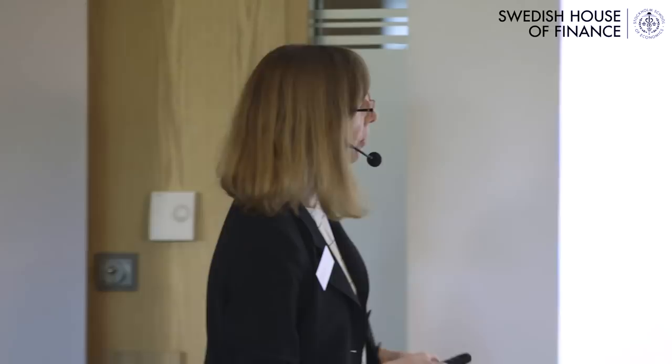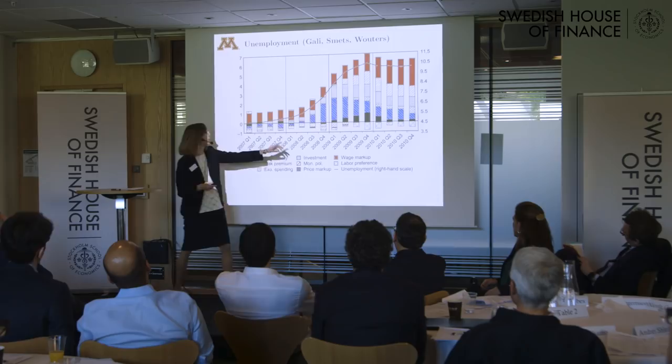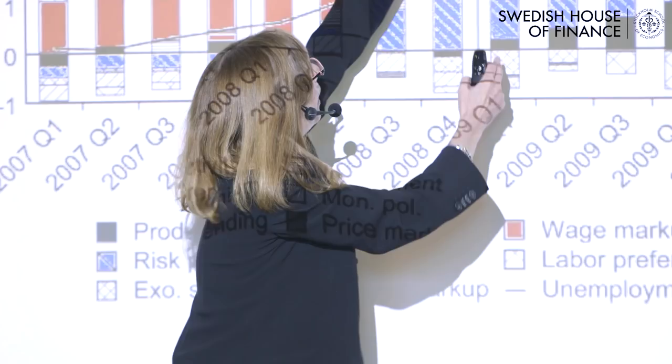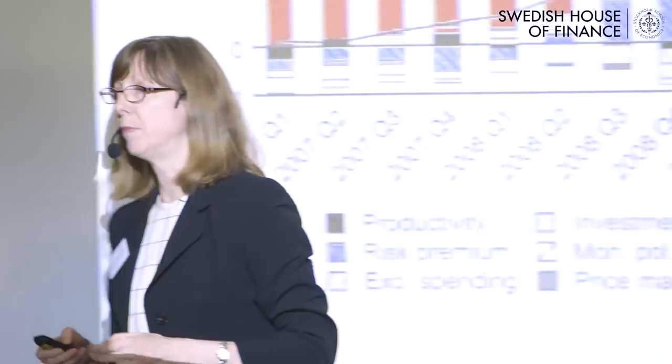In the old days there used to be lots of people talking about wage markup shocks, and now lots of people are talking about risk premium shocks. They account for a lot — if we take 2009 quarter one, you've got 4%, and 3.5% is accounted for by the red and blue. That's a lot.